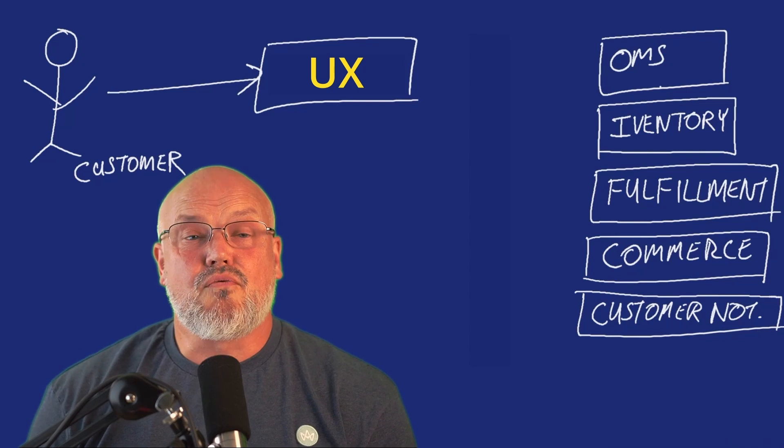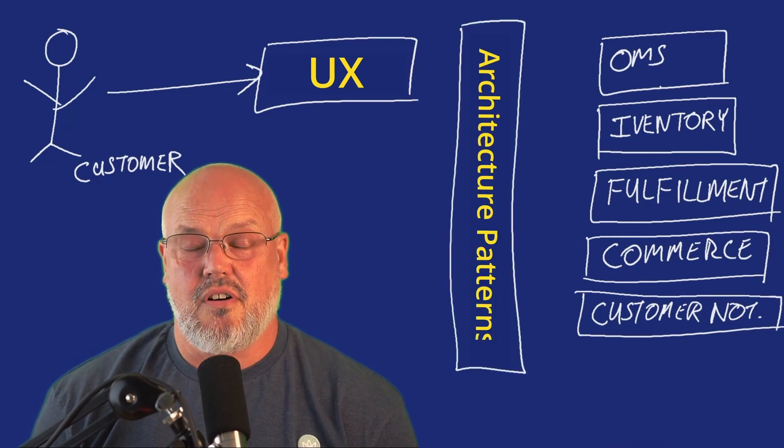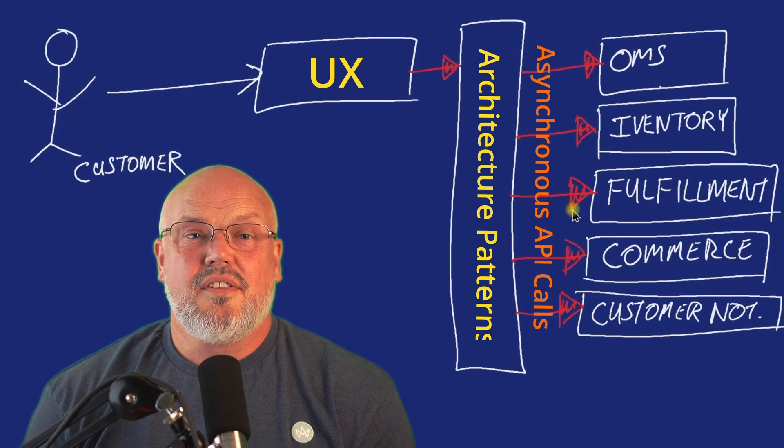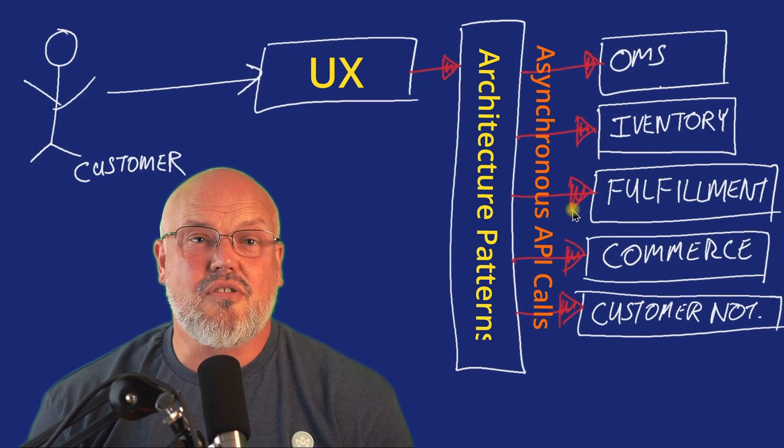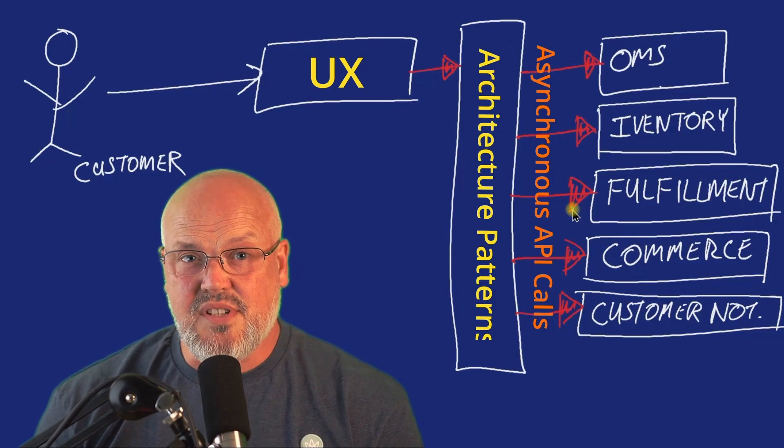This means that a full implementation of a MACH system is not a simple system. Although the implementation, the deployment, the development, the scaling, and the management of all of these services are done by the vendors, the complexity is in the joins. It's ensuring you get the glue right, ensuring you get data consistency across all of these services and providers, and ensuring you have the right patterns for things like asynchronous calls and reducing latency across all of these API calls and microservices.